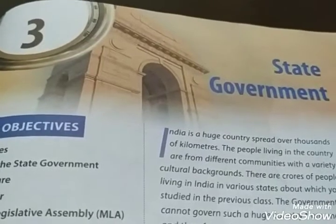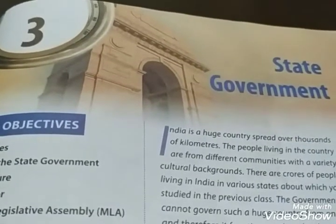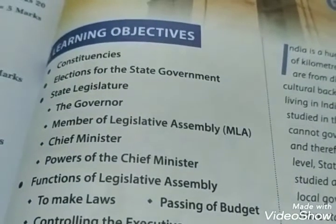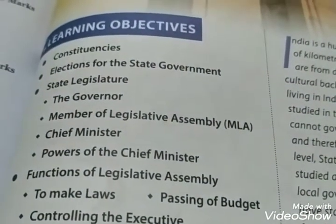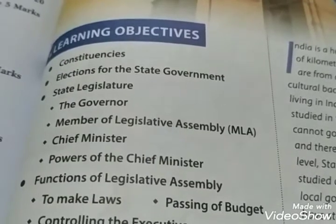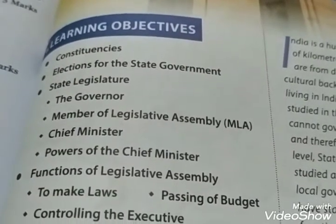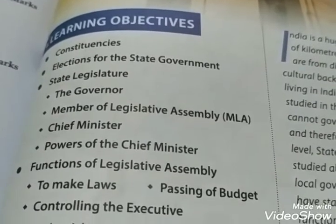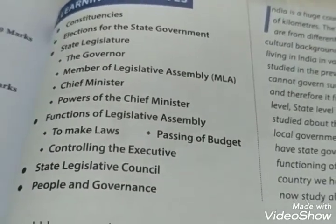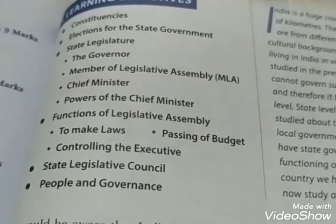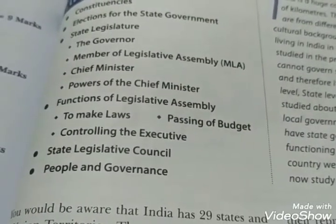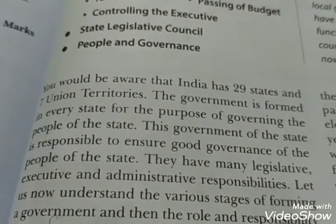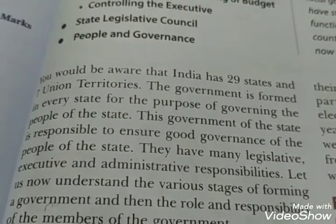Hello students, this is the third chapter of civics. The title is 'State Government.' In this chapter we discuss the constituency, election for the state government, state legislature, governor, member of the legislative assembly, chief minister, power of chief minister, function of legislative assembly, as well as the state legislative council and how the state government is formed.